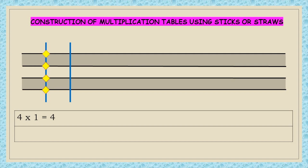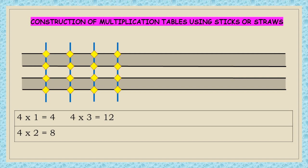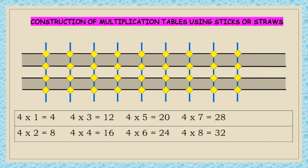Similarly, place one more vertical stick and mark the points at which it touches the four horizontal sticks. Add all the points of contact — there are eight such points. Four into two is equal to eight. We go on adding sticks and count the number of points in contact, and we come to four into ten is equal to forty by adding sticks vertically one by one. We construct the table of four.